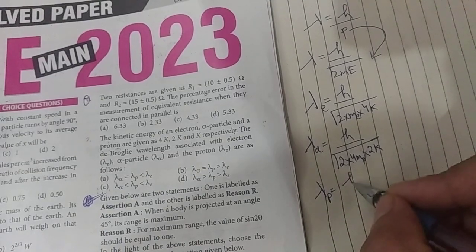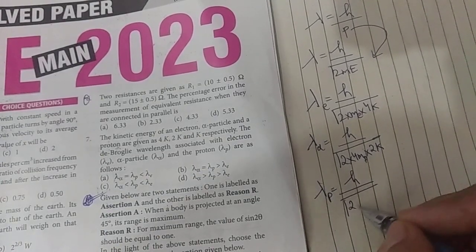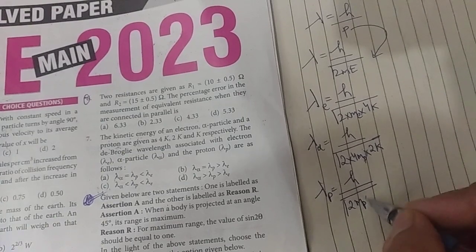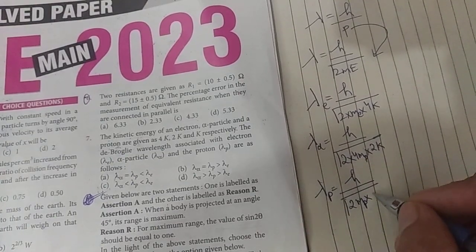Then for proton, lambda is equal to h upon under root 2 mp multiplied by its kinetic energy capital K.